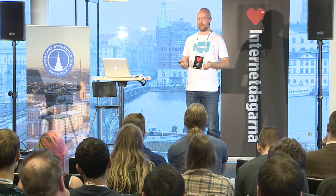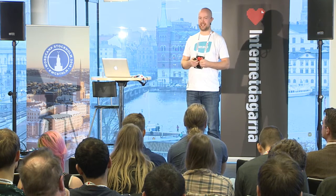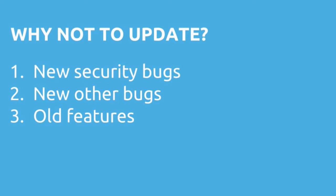There can also be bugs in your software, and it's nice for users when those get fixed in new versions. Sometimes new versions bring new features which benefit users. On the other hand, why not update? Because new code can bring new bugs, new security bugs, and sometimes developers deprecate old features that users might still be using.